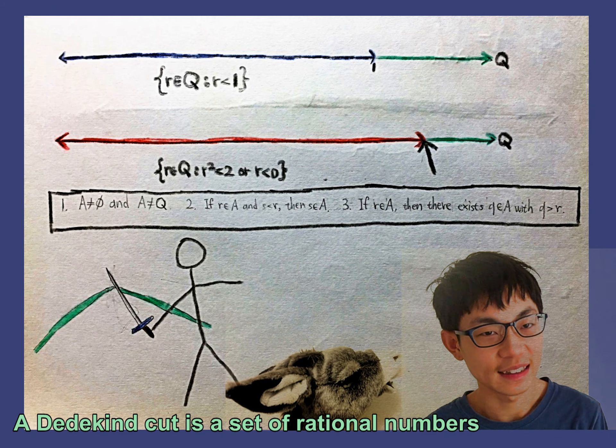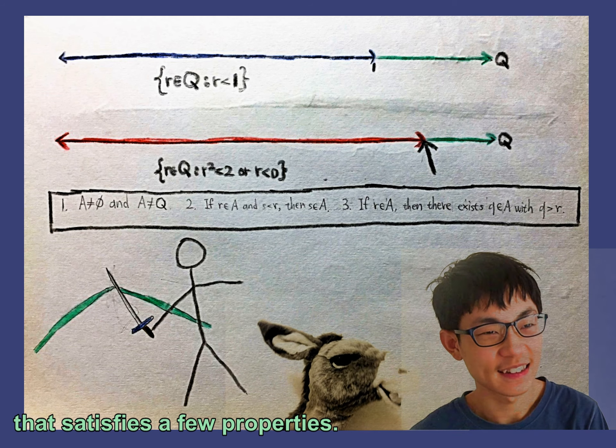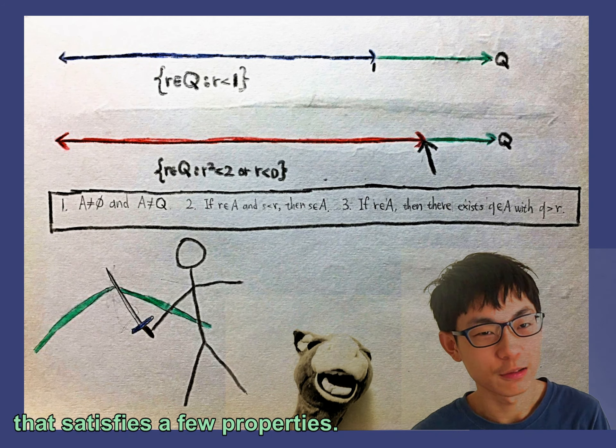A Dedekind cut is a set of rational numbers that satisfies a few properties. If A is a Dedekind cut, then A is not empty and A is not all of the rational numbers. If A contains a rational number R, then A contains every rational number less than R. A does not have a maximum.